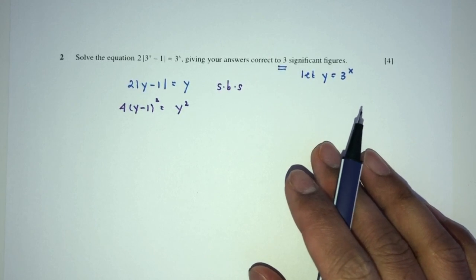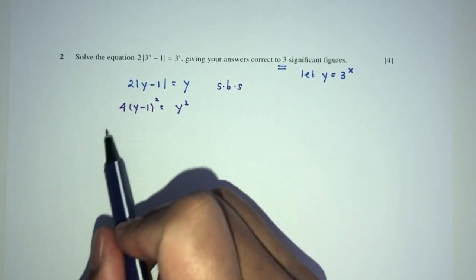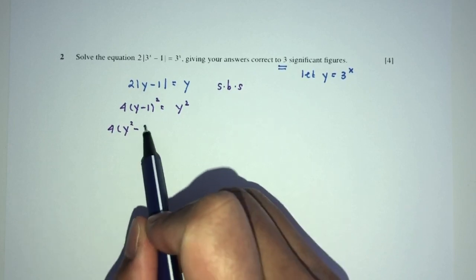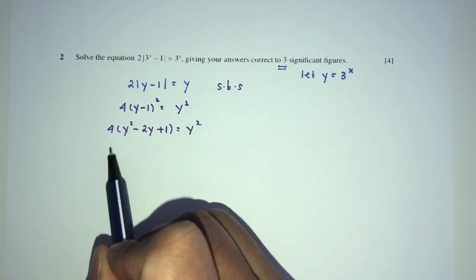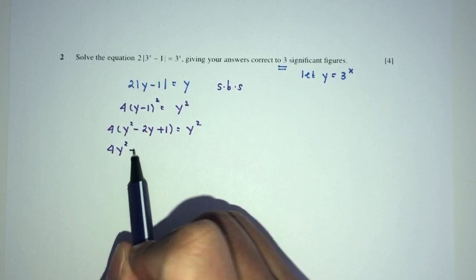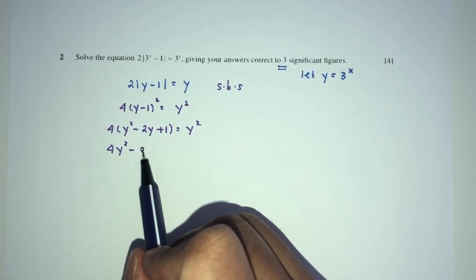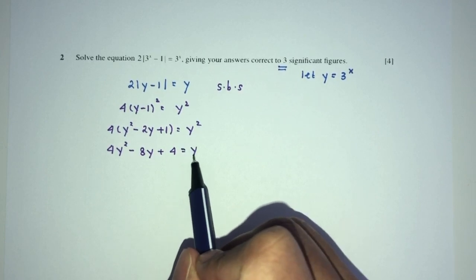Now, here we can expand. You will have 4 here. That will be y squared minus 2y plus 1, is equal to y squared. Expand, you have 4y squared minus 8y plus 4 has to be y squared.